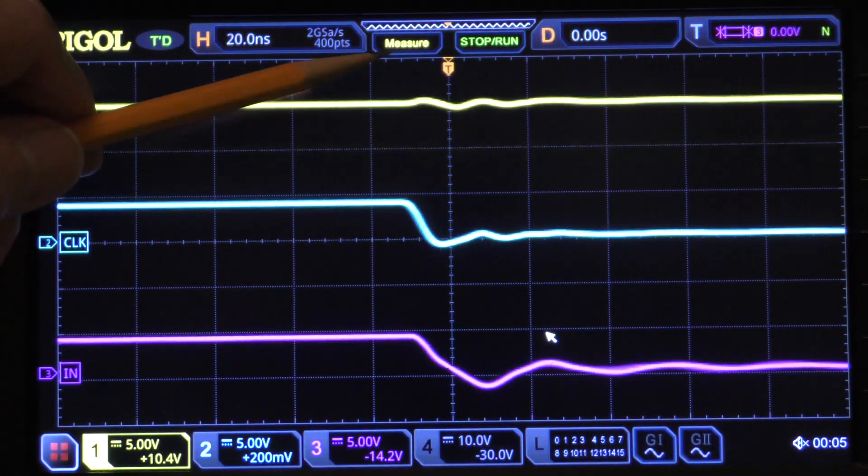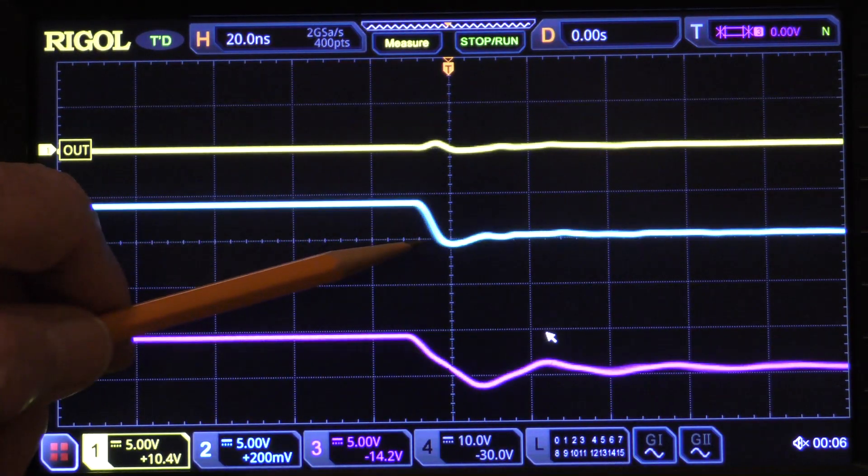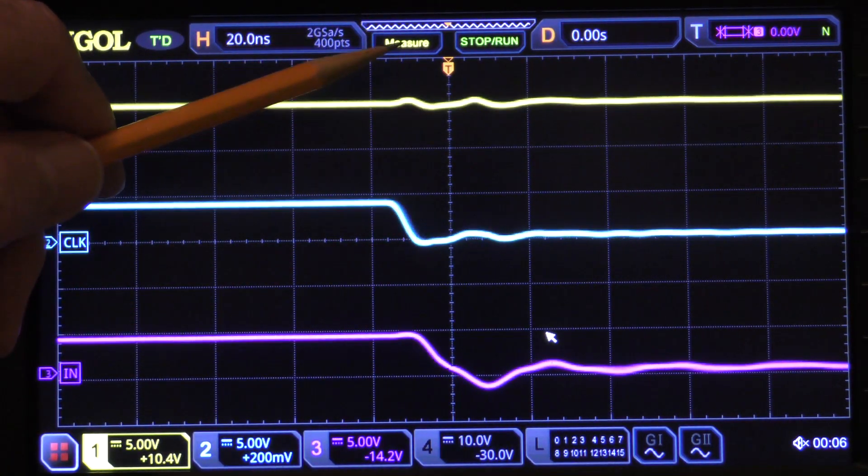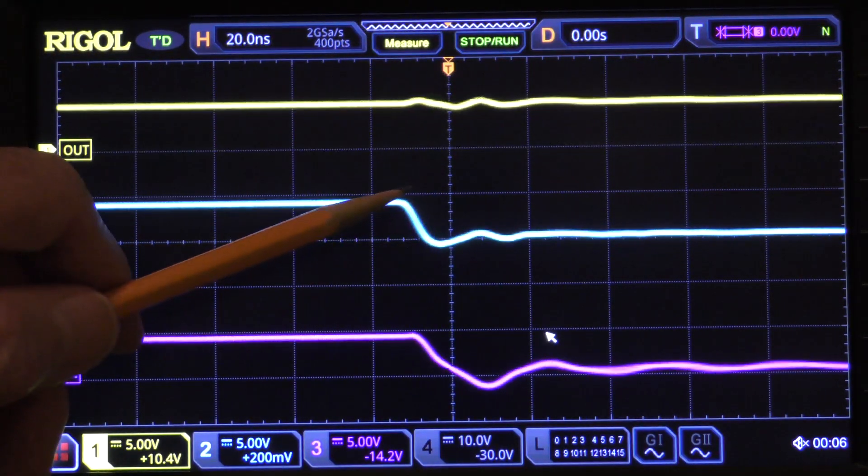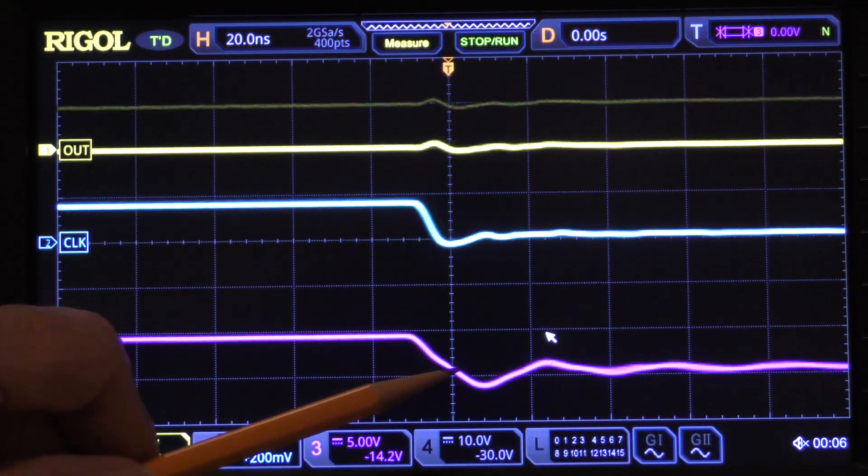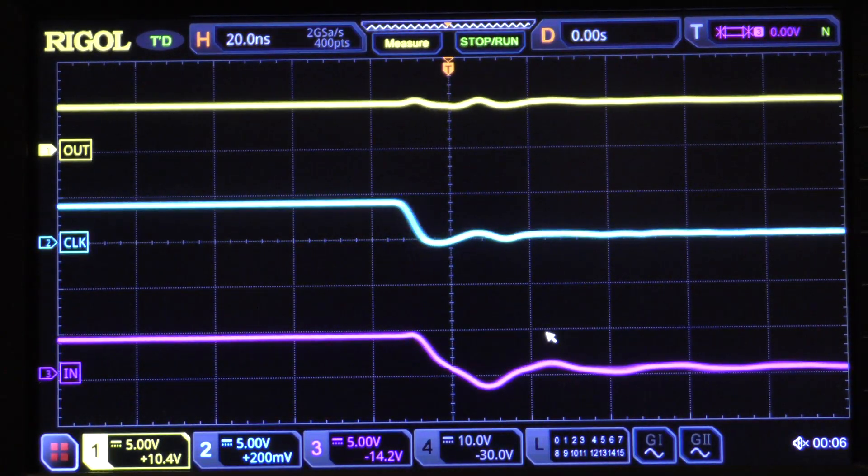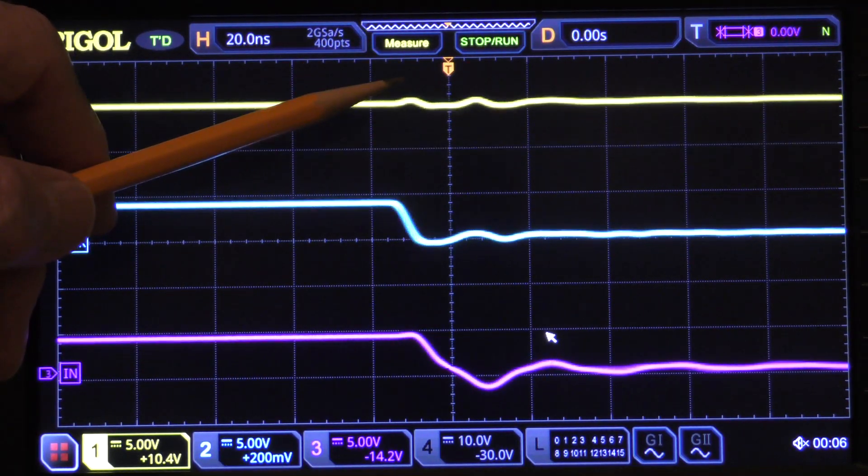And as we see here, that means that instead of the output remaining at a 1, which it should, every time the clock transitions the output should be latched to a 1. But because of the clock jitter and in part because of the slow fall time of the data input, sometimes it latches at a 1 and sometimes at a 0.